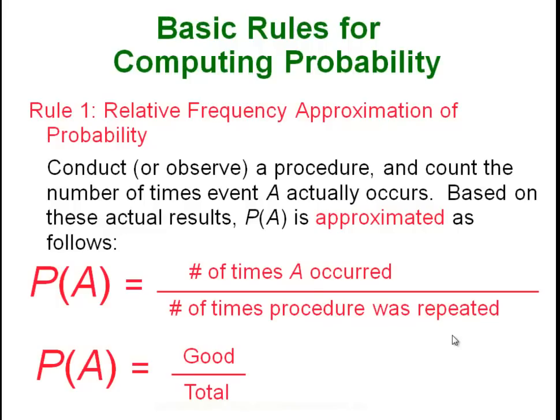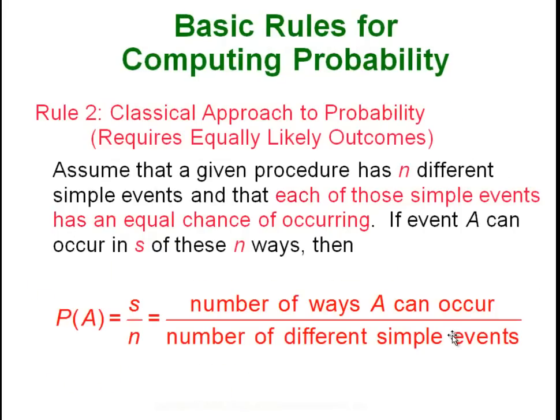In this particular instance, this is how you figure out probability when you are actually running an experiment and observing the outcomes. But we can't go around and force everybody to have three kids and count up how many had two boys and a girl, so we normally simulate things. This is where the classical approach comes in: we have a procedure with n simple events each having an equal chance of occurring, so it's just as likely to have boy-boy-boy as boy-boy-girl as girl-girl-boy, and so on. The probability of A is the number of ways A can happen divided by the total number of ways the procedure can happen — good over total, just more theoretical than observed.